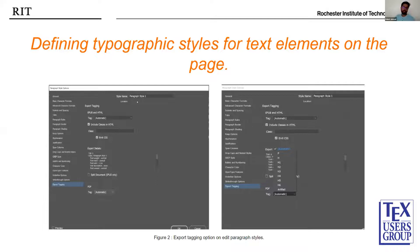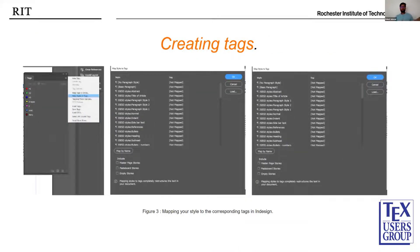In this properties panel, you tell the editor that this paragraph style will be exported as a paragraph tag, or an H1 tag — whatever your need, you can define those tags there. Once that's done, all the tags you've defined now need to be mapped again. This is a similar step to what we did previously, but it's an additional step to let InDesign know how we are mapping all our tags in the properties panel.